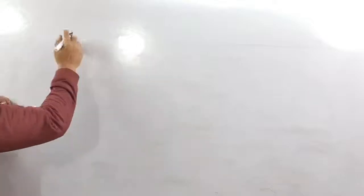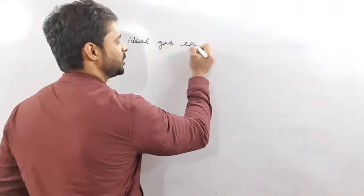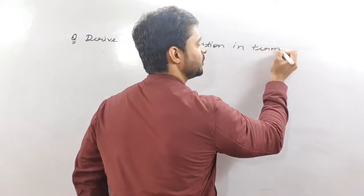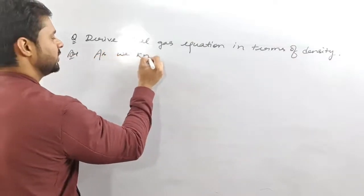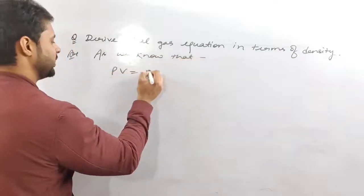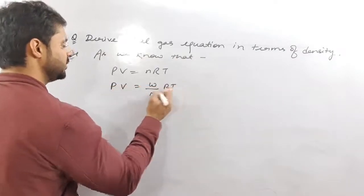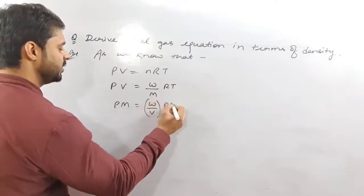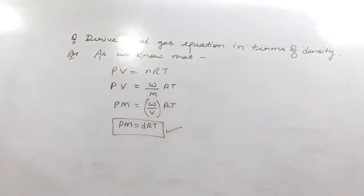Now, the ideal gas equation in terms of density: as we know PV = nRT, and n = w/M, so PV = (w/M)RT, which gives PM = (w/V)RT = dRT. So PM = dRT is the ideal gas equation in terms of density.